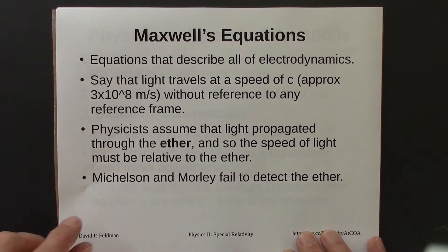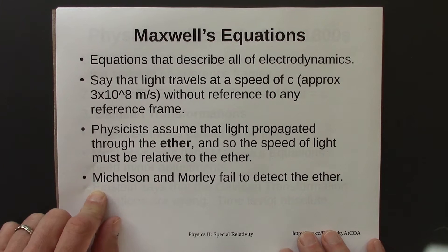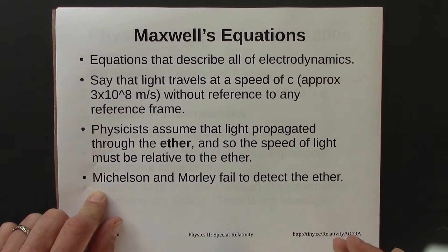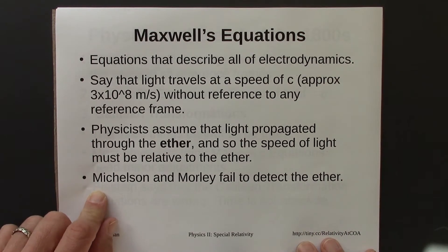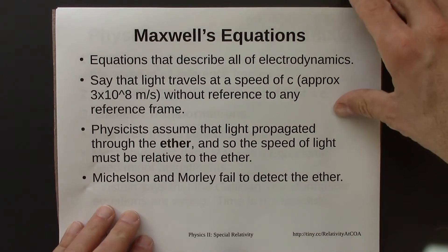Michelson and Morley in the late 1800s conducted a series of experiments — very high precision measurements of the speed of light — and they failed to detect the presence of the ether.